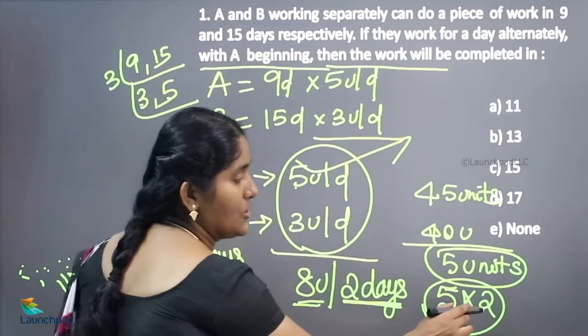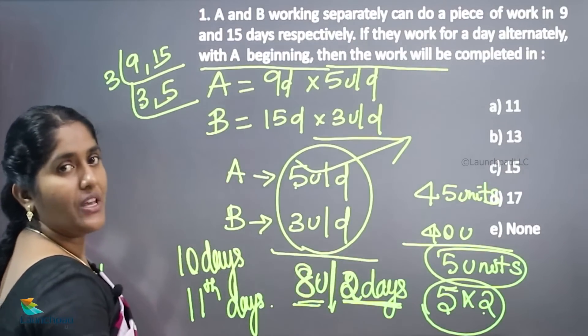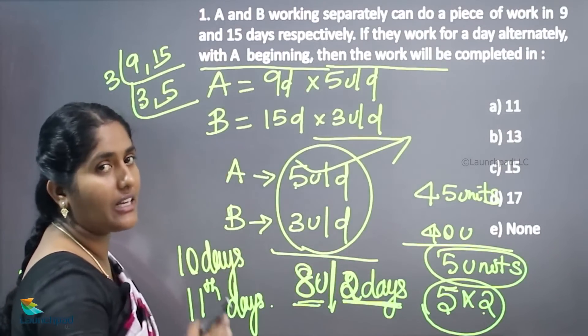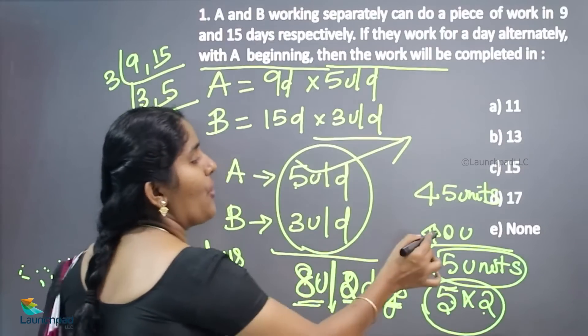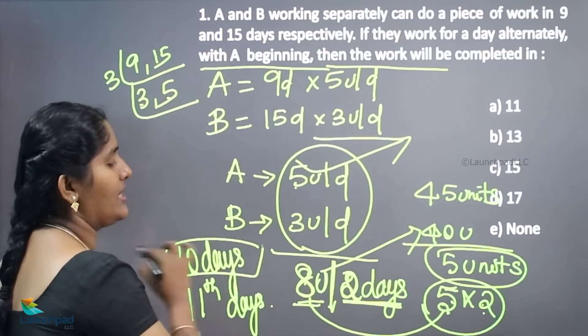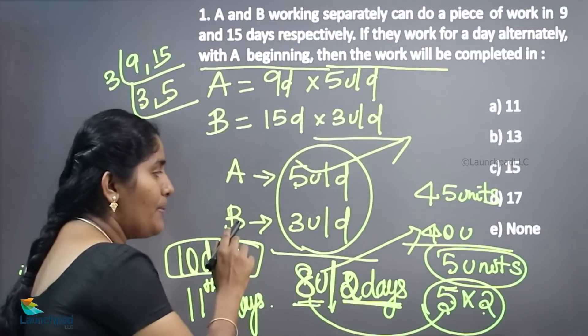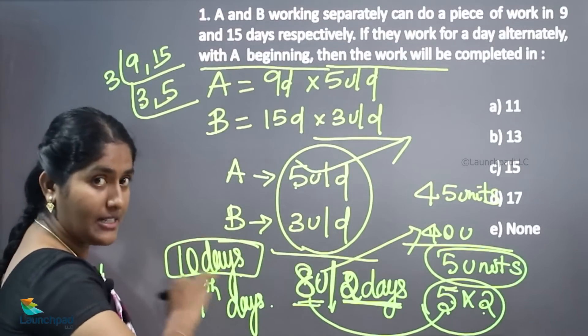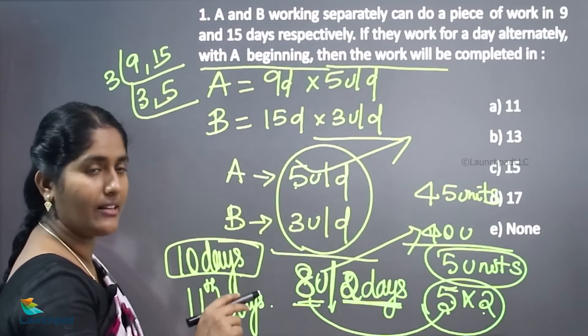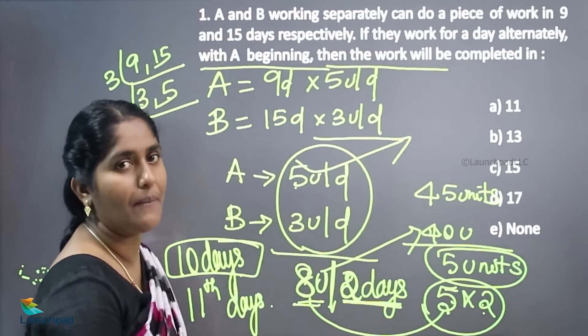Why I am multiplying this into 2 means because 8 unit is your 2 days work unit. Find out how many 8s are there. Don't take decimal value, consider the exact 8 value. 5 eights are 40, 5 into 2 is 10 days. Actually 10 days require to complete the 40 units because of alternate days. Now A started the work, the next day A can do the job. Remaining 5 units are there, they can complete 5 units. So 11th day the entire work will be completed.